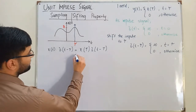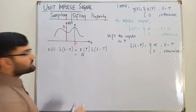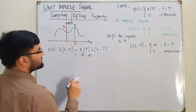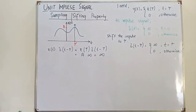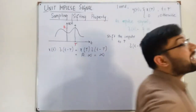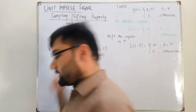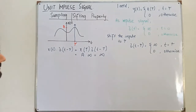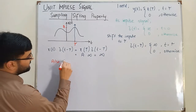Now the value of x of tau is a (finite) and the value of delta of t minus tau is infinite, so multiplying a finite number with infinity gives infinity — this is not what we require. We require the value of x of tau; we need to sample it, but we are getting infinity. So this approach is wrong. The correct approach is to also integrate this product.